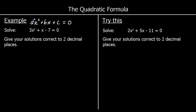So a is the number before the x squared, so a is 3. B is how many x's we've got, and that's 1 — so we've got 1x here, so b is 1. And c is negative 7. So we need to substitute this in to the quadratic formula.